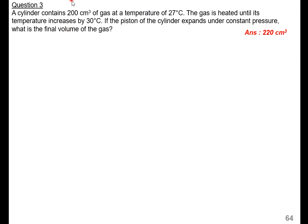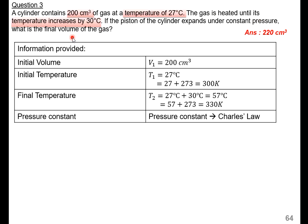A cylinder contains 200 cm³ of gas at a temperature of 27 degrees Celsius. The gas is heated until its temperature increases by 30 degrees Celsius. If the piston expands under constant pressure, what is the final volume of the gas? Initial volume V1 is 200 cm³. Initial temperature is 27 degrees Celsius — but remember, for temperature we need to convert to absolute temperature in Kelvin: 27 plus 273 equals 300 Kelvin. Final temperature T2: 27 plus 30 equals 57 degrees Celsius.